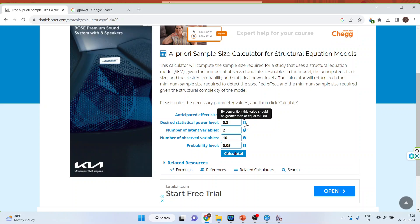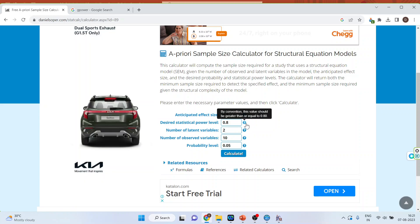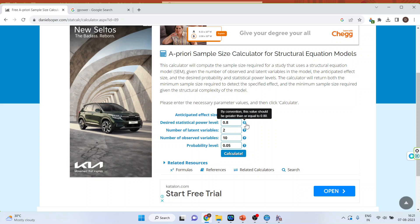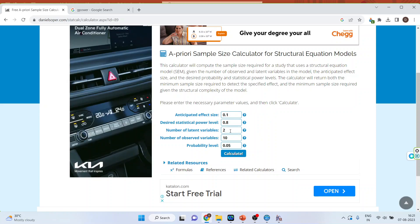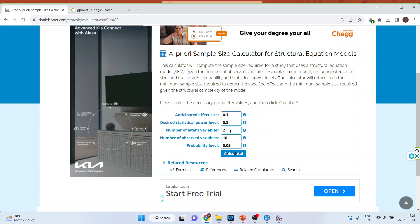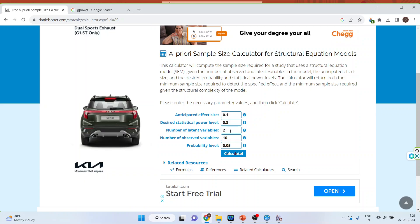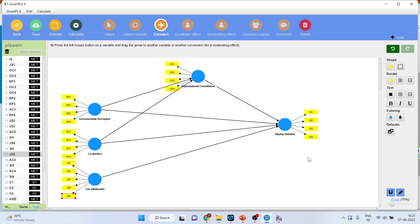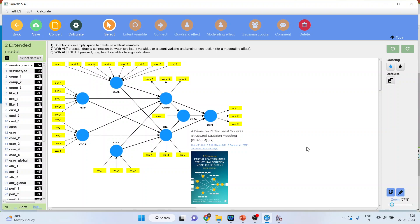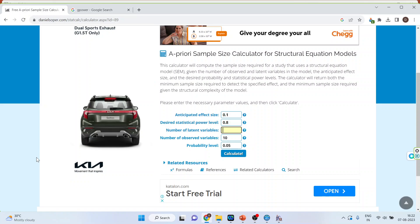Second is desired statistical power. Normally it should be more than 0.8. Number of latent variables in your model. So let's go back in Smart PLS. And we will, this time, we will take another model. So this is a corporate reputation model which is given in Smart PLS. We will count how many latent constructs are there. 1, 2, 3, 4, 5, 6, 7, and 8. So let's insert this number. Number of latent variables is 8.